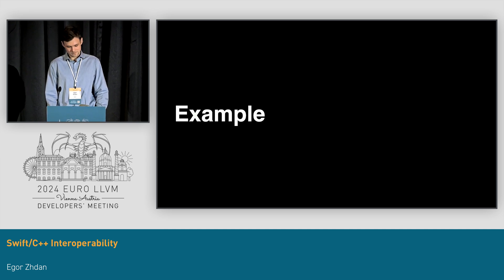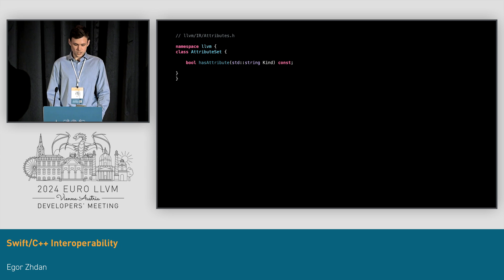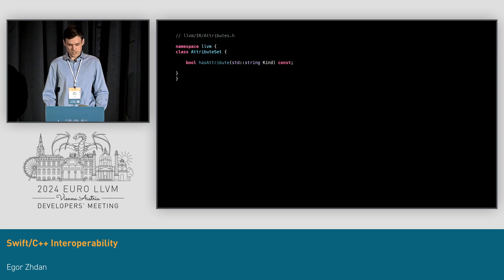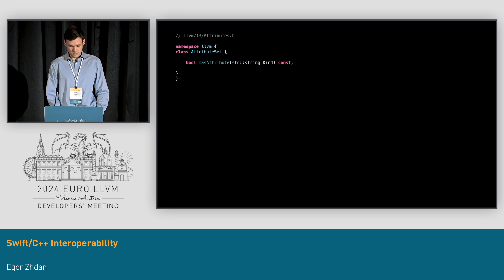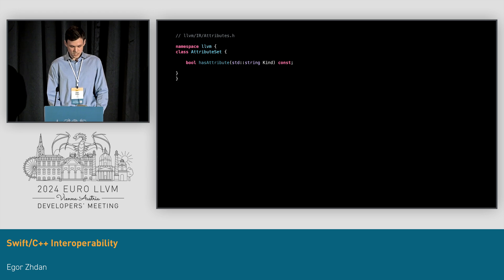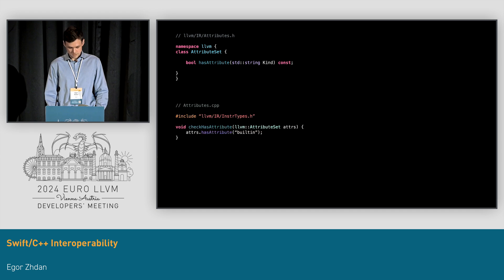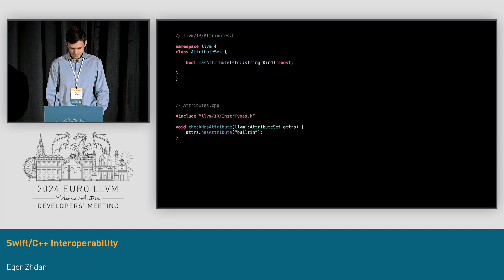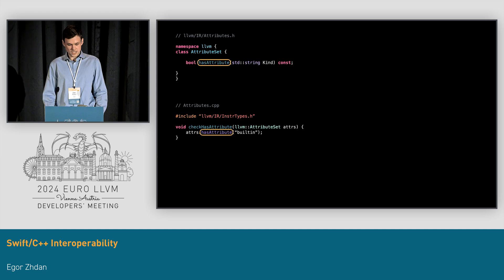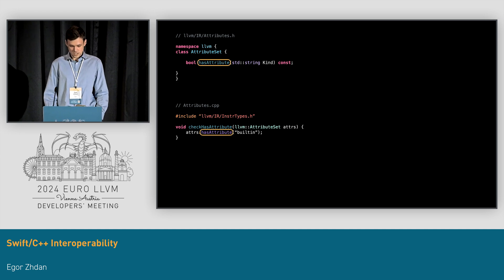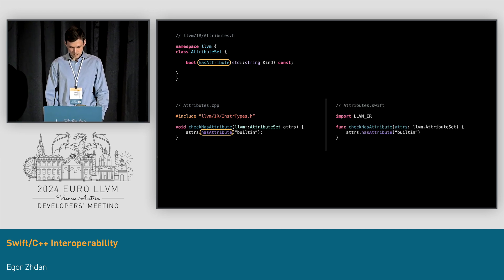Now I want to give you an example. Let's assume we are implementing a new feature in LLVM and we need to handle a certain IR attribute, so we are working with LLVM AttributeSet. You can see a super simplified definition on the slide. We just need to check if an attribute is present in the attribute set. Here's how you could do it in C++ — you would just call a method defined on the AttributeSet class. And here's how you would do it in Swift: it works almost exactly the same way. The function gets an attribute set as a parameter and invokes a method on it.